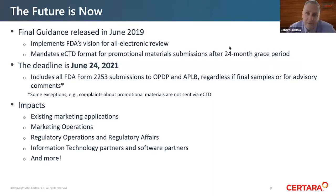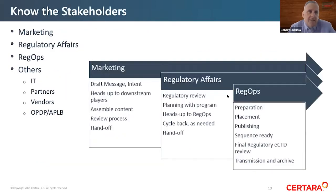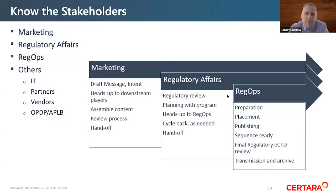Thanks, Rachel. As far as impacts go, the main takeaway from the waterfall process flowchart is: know your stakeholders across the enterprise. More often than not, people in each of these areas are very focused on their particular piece and are either not aware of, or don't understand, the total process and all the different linkages.